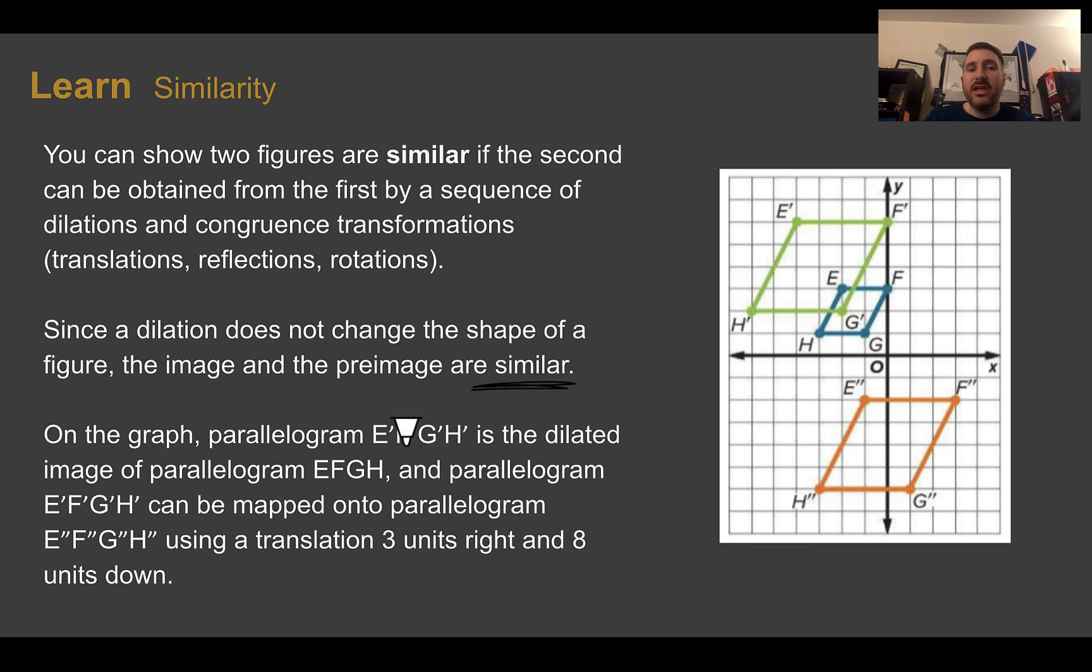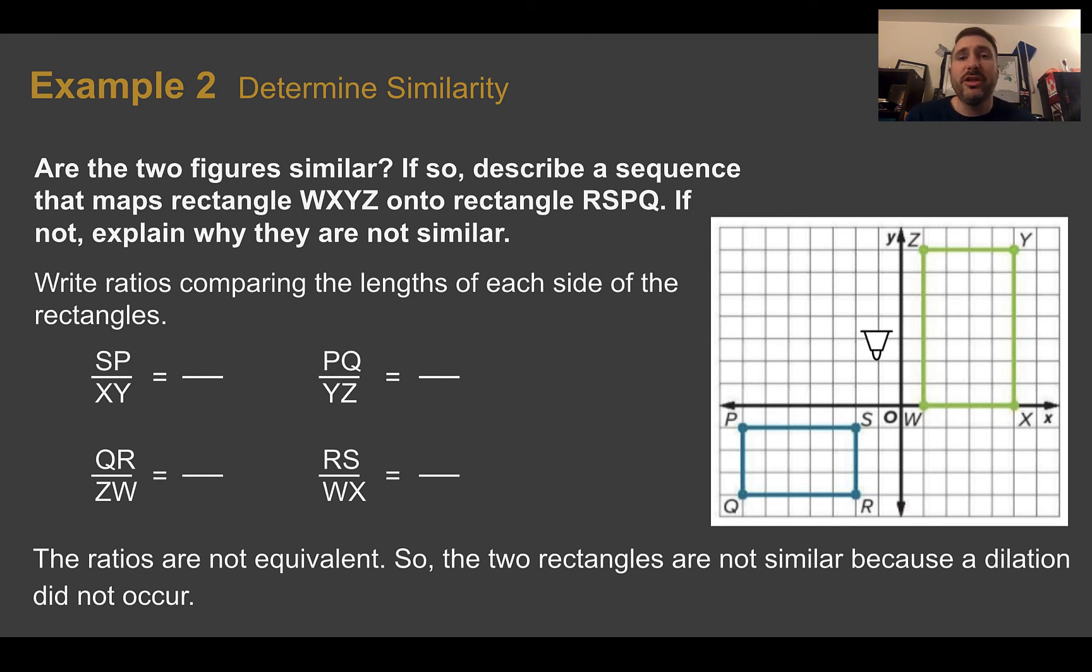On the graph, here we have E'F'G'H', this green parallelogram. It was dilated from EFGH, and it looks like it was a scale factor of 2. Everything is now twice as far away from 0, 0 as it was before. If we want to know if E''F''G''H'', this orange parallelogram, is similar to our original, we could use the fact that our green one was dilated, and then I can just translate it down on top of that orange one. So because I can map my blue one to the orange one by using a dilation and then a translation, these are similar. Now, there is a faster way to determine if two things are similar.